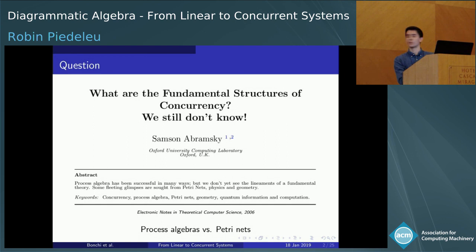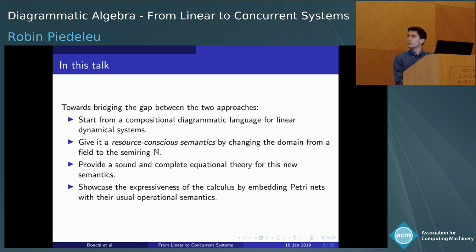Petri even wanted it to be a sort of discrete physics. But it's less appealing from a programming perspective, and certainly from the point of view of this community, because it's monolithic. There's no obvious way to build a specification of larger systems from simple ones.